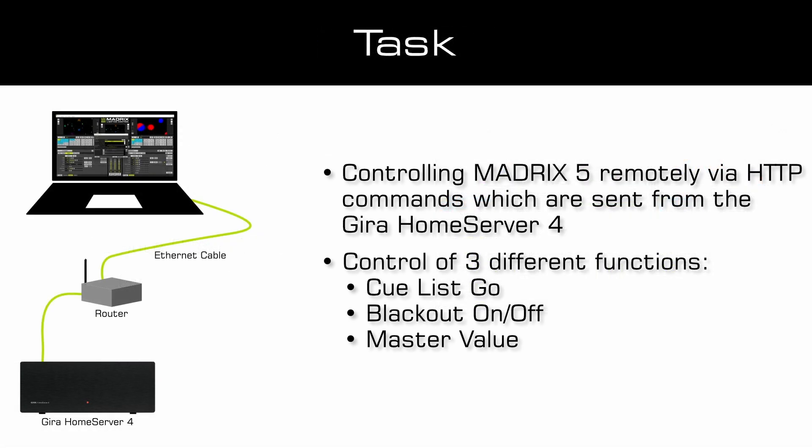As a task we have to control Matrix 5 remotely via HTTP commands which are sent from the Gira Home Server 4. We have to control three different functions inside of Matrix: we want to change the QList with a QList Go command, we want to enable or disable the blackout, and we want to change the master value.